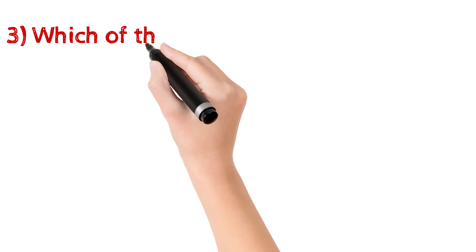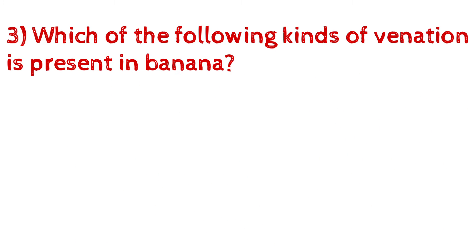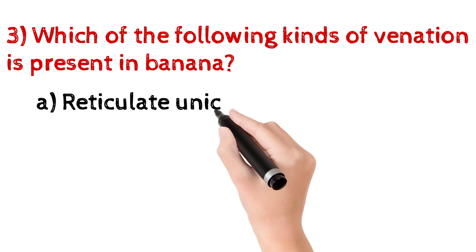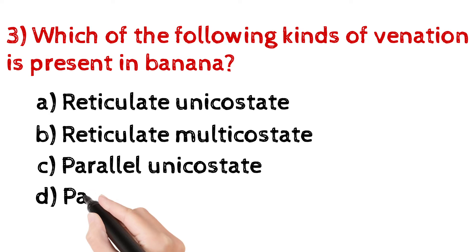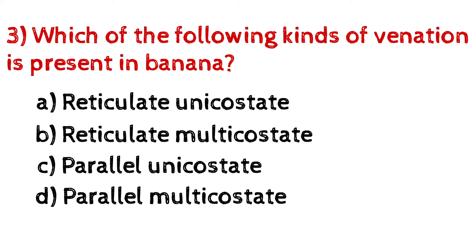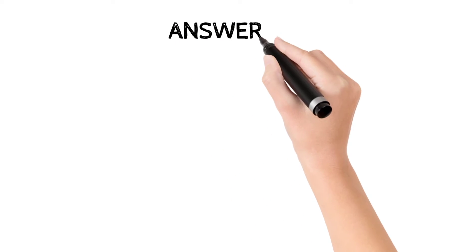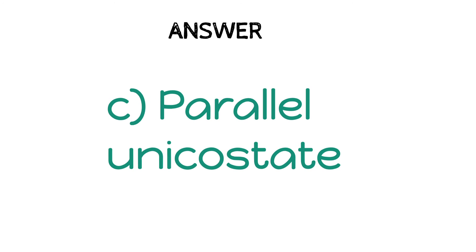Question number 3: Which of the following kind of venation is present in banana? A. Reticulate unicostate, B. Reticulate multicostate, C. Parallel unicostate, D. Parallel multicostate. And the answer is C, Parallel unicostate.